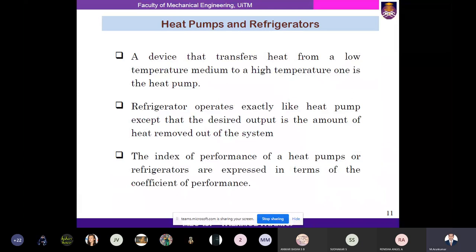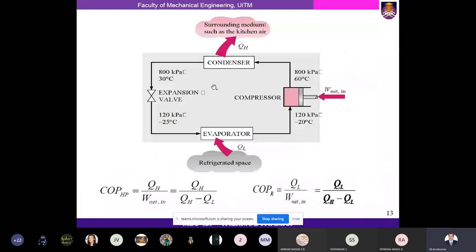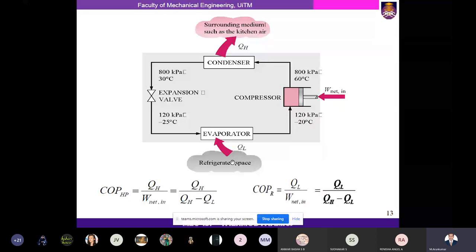A heat pump system has a compressor, an evaporator, an expansion valve, and a condenser. You know the process in each device: compressor increases pressure and temperature; expansion valve reduces pressure and temperature from high to low; the evaporator gives a reduced temperature; and the condenser rejects heat. These device performances were already discussed earlier.